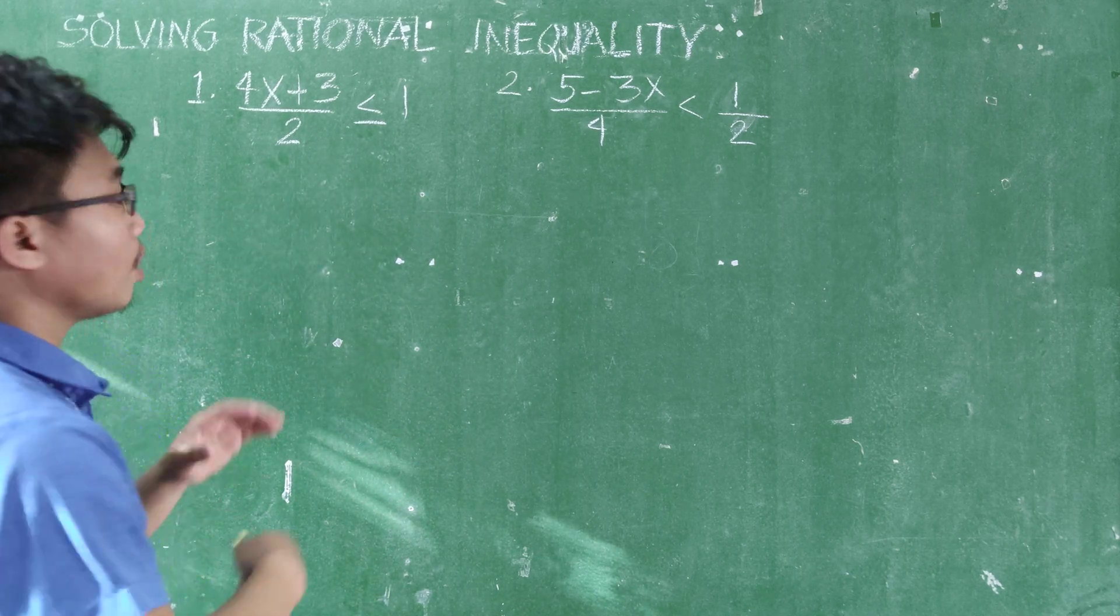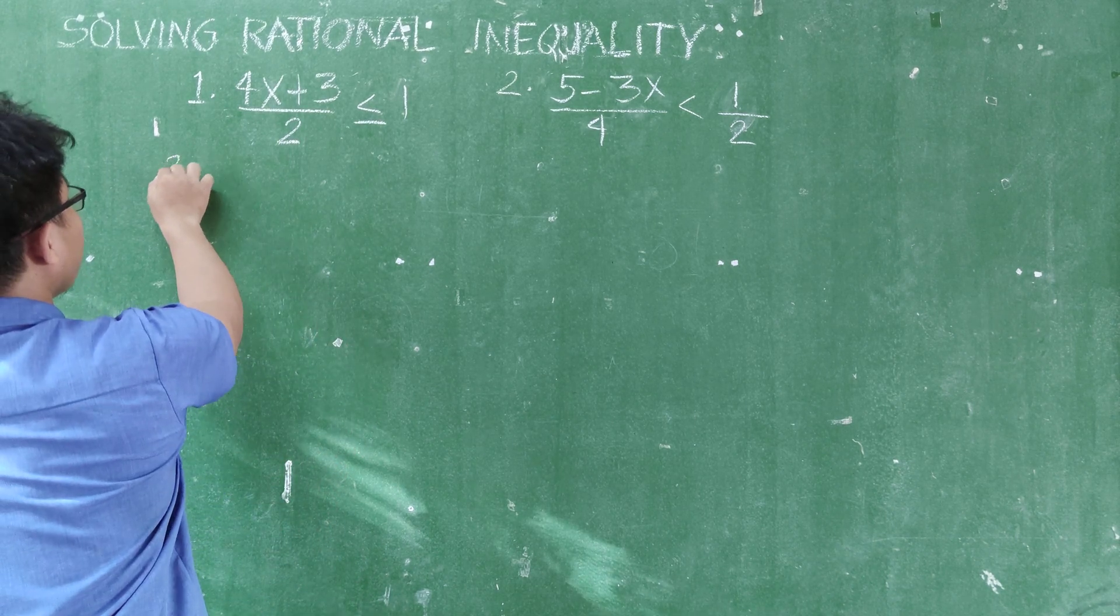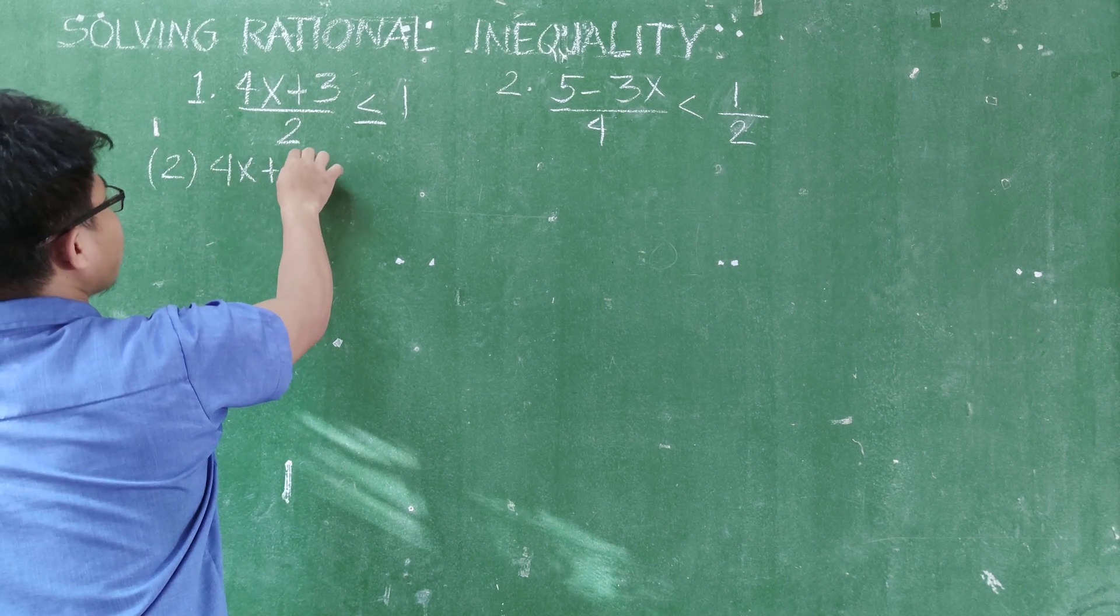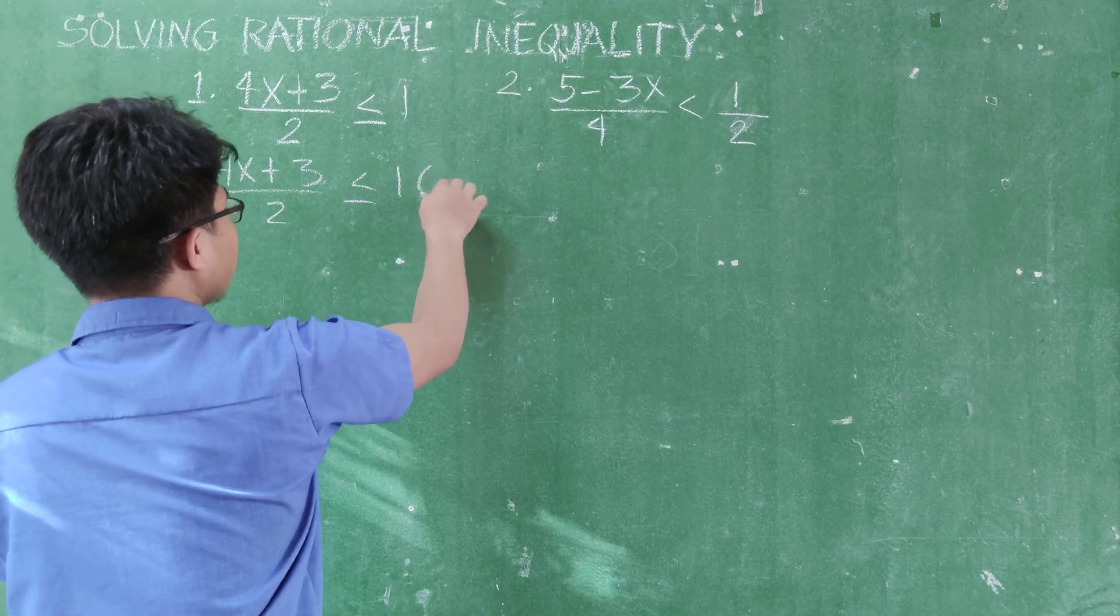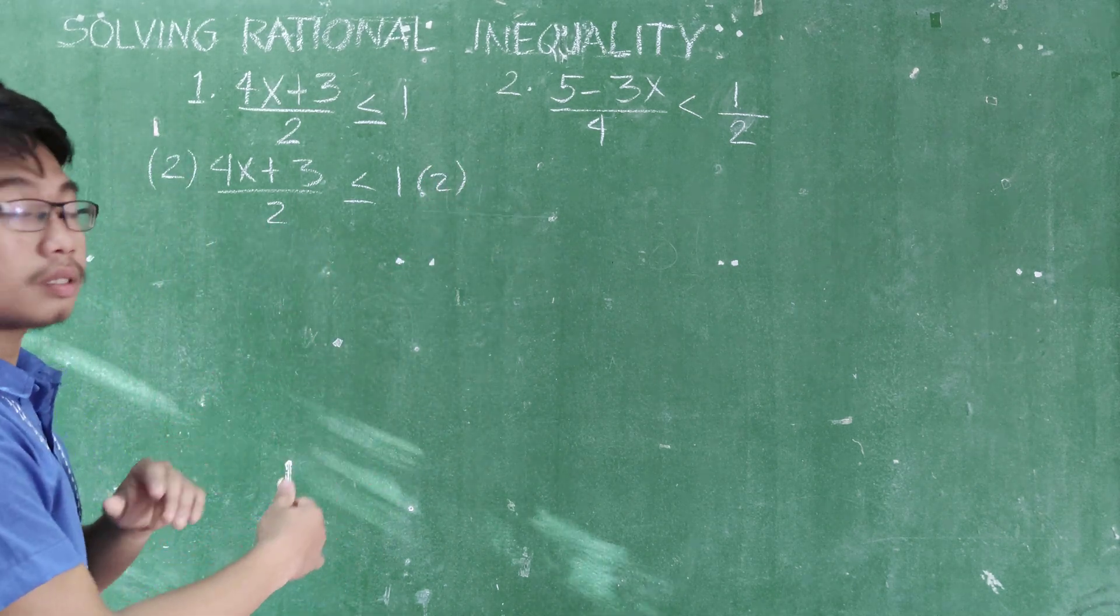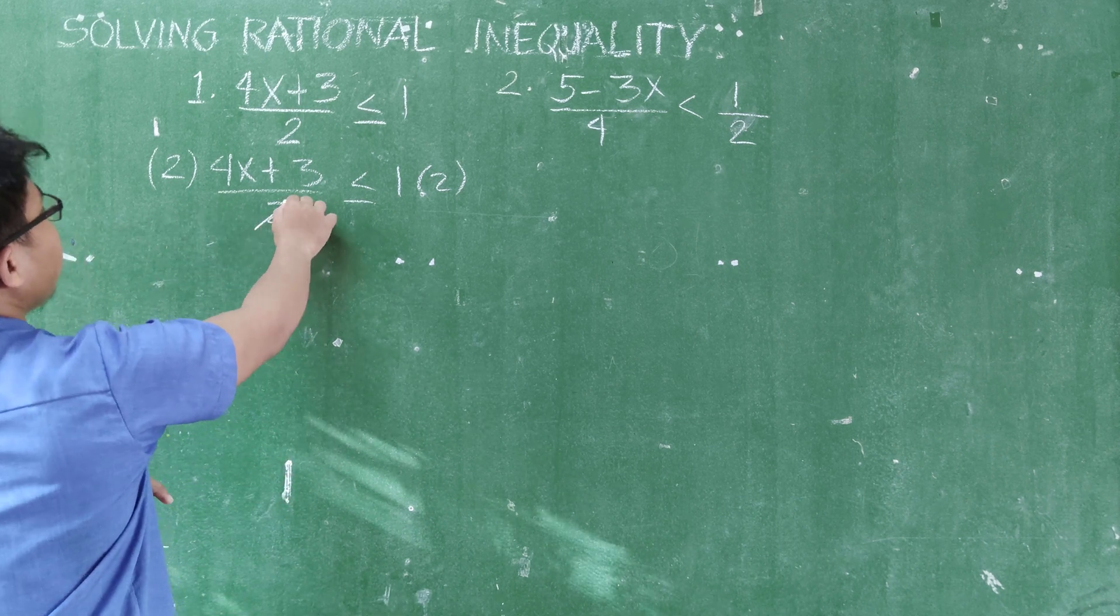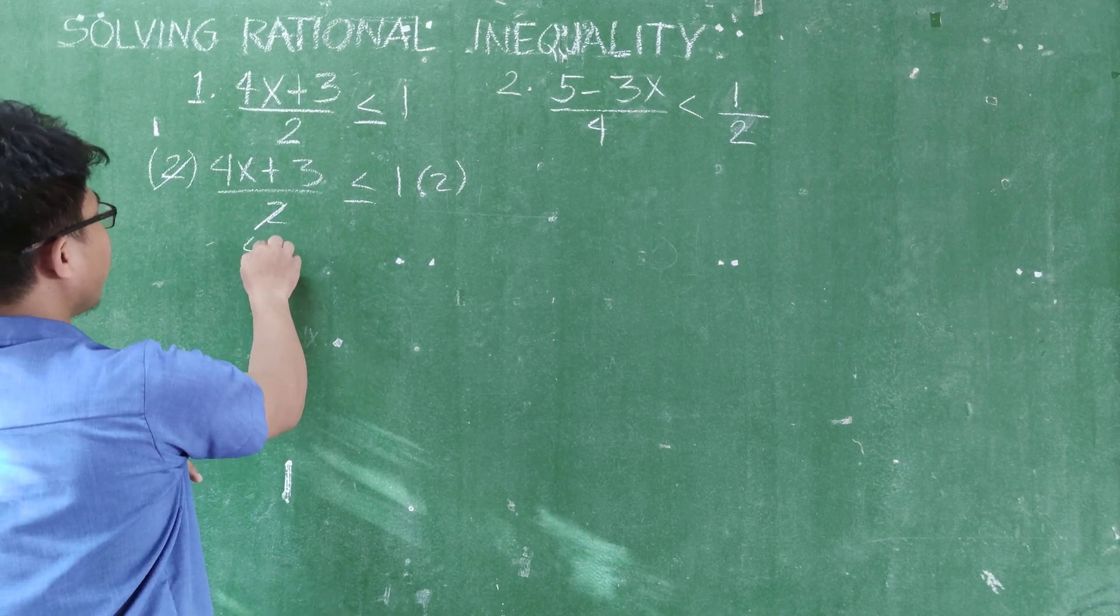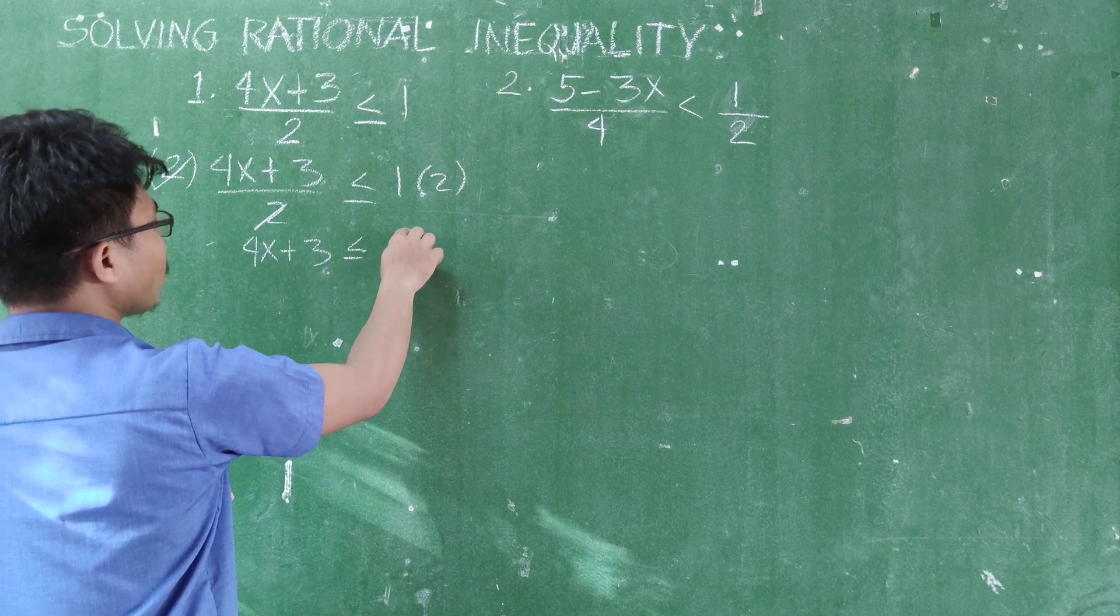Now, once you know the LCD, we can now proceed. So we multiply both sides by the LCD. We have here 2, multiply by 4x plus 3 all over 2, less than or equal to 1. And then multiply the right side also with 2. And then we can now proceed to simplify. So when we multiply 2 over 2, divide this. So this one is cancelled. What remains is 4x plus 3 less than or equal to 2.